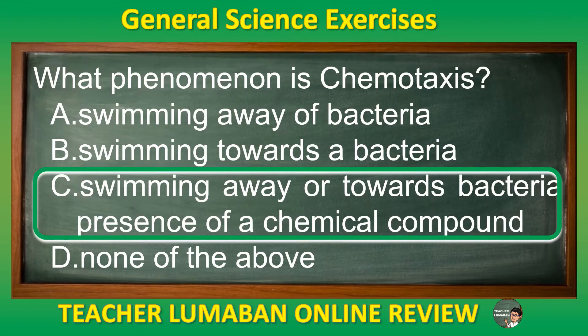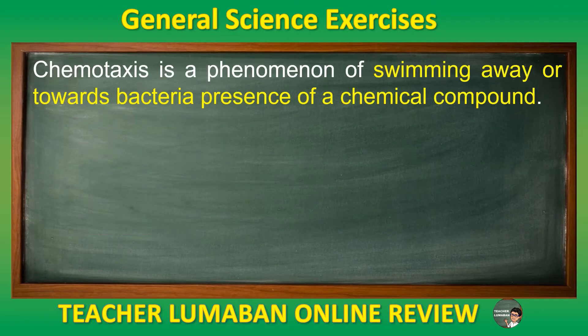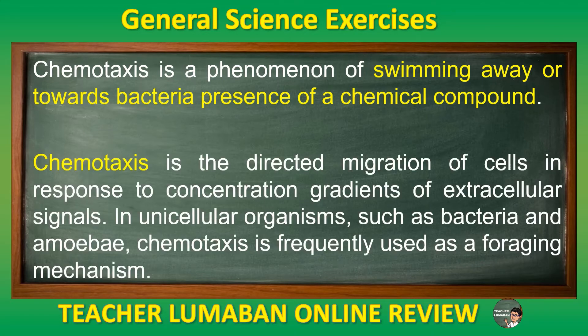The correct answer is Letter C: Swimming away or towards bacteria in the presence of a chemical compound. Chemotaxis is a phenomenon of swimming away or towards bacteria in the presence of a chemical compound. Chemotaxis is the directed migration of cells in response to concentration gradients of extracellular signals. In unicellular organisms such as bacteria and amoeba, chemotaxis is frequently used as a foraging mechanism.